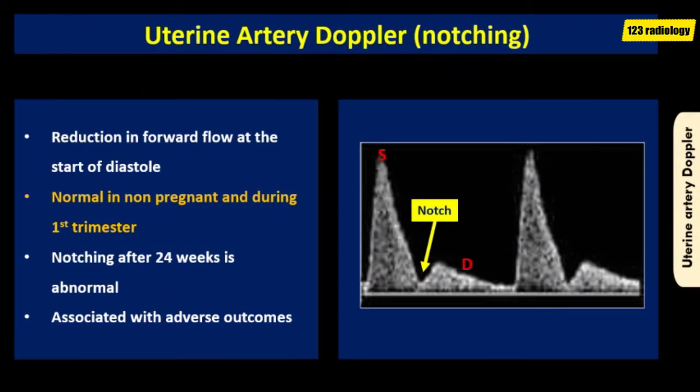Notching is a common feature of the uterine artery Doppler waveform, defined as a reduction in forward flow at the start of diastole. It is present normally in the non-pregnant uterus and in the first trimester of pregnancy. It is thought to represent abnormal uteroplacental flow. Bilateral persistence of notching after 24 weeks of gestation is abnormal and has been associated with adverse outcomes including fetal growth restriction, maternal preeclampsia, and increased risk of preterm labor.